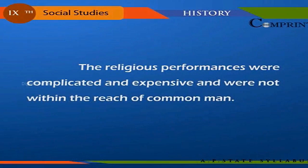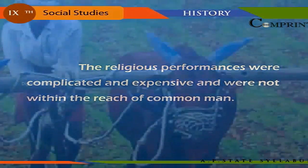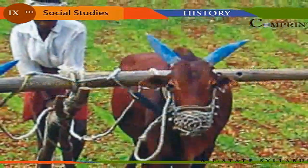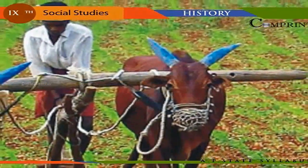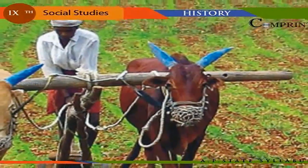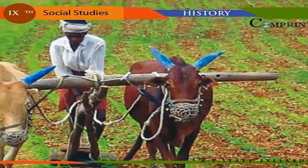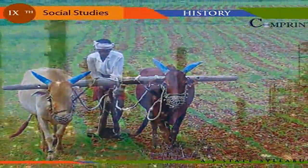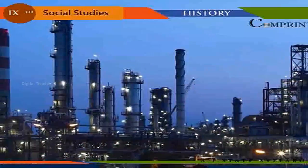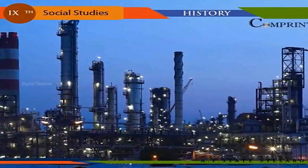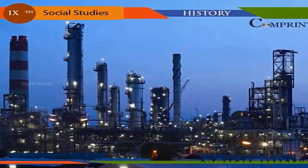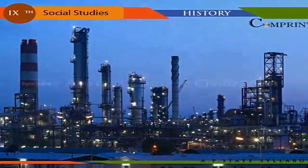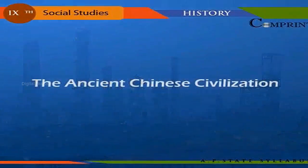In Kashi, Kosala, Kuru, and Panchala, powerful kings ruled the kingdoms. The religious performances were complicated and expensive, and were not within the reach of the common man. In the second phase, on account of the extensive use of iron in northern India, agricultural products greatly increased, along with the development of trade and industry.